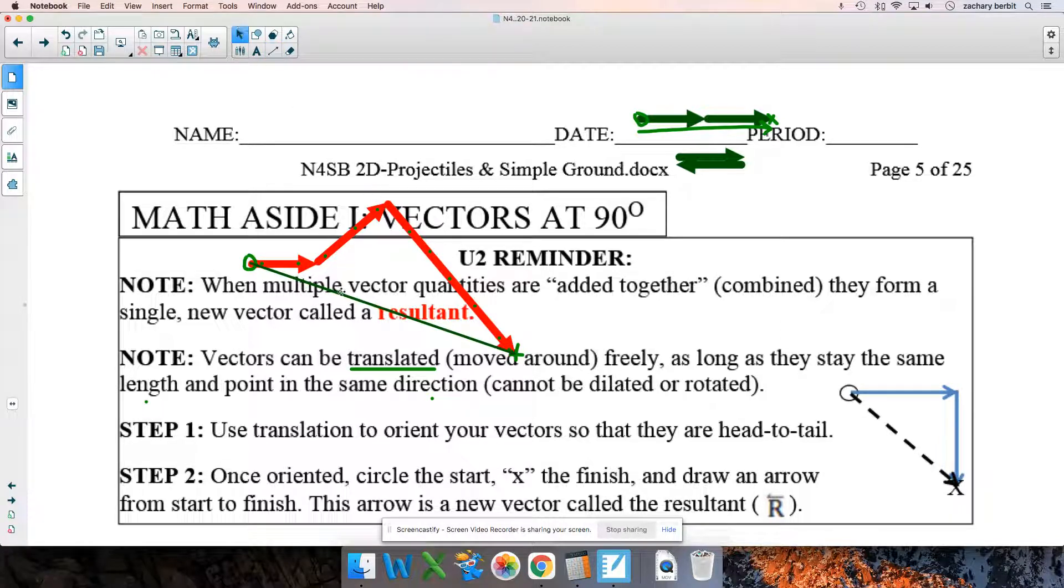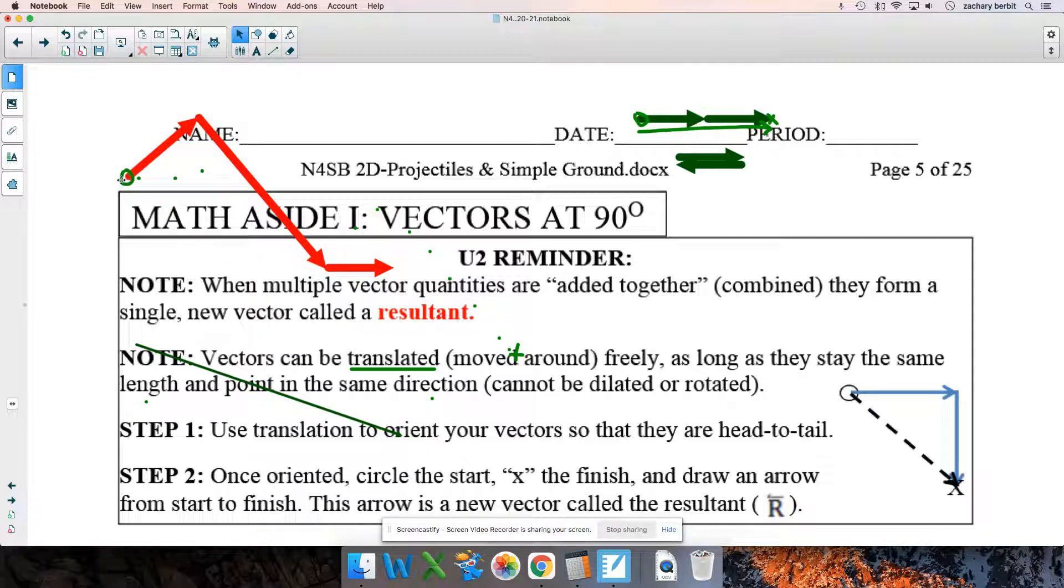And the neat thing about this is no matter which order you put them in, let's take that resultant away. Maybe you go this one first, this one second, this one third. You still circle the exposed tail, X the exposed head, and draw your resultant. And as it turns out, it is, boom, exactly the same. So, the order doesn't even matter which order you do them in.